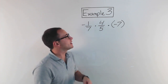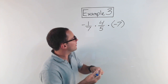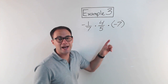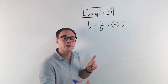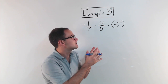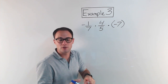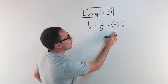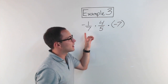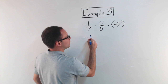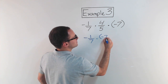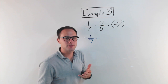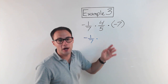Let's try example three. I'm still multiplying with fractions, but now I have three rational numbers multiplied together. Because it's all multiplication, I can change the order — the commutative property says order doesn't matter when it's all multiplication or all addition. Hopefully you notice you've got negative seven and negative one-seventh — those are reciprocals. So I'm going to rearrange it to negative one-seventh times negative seven, and rewrite negative seven as a fraction over one.